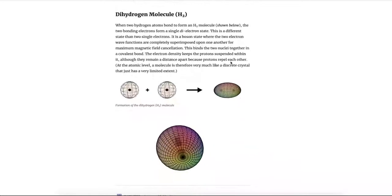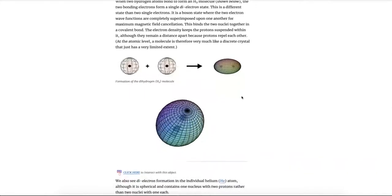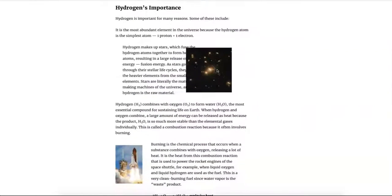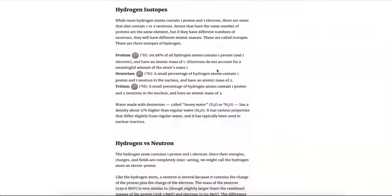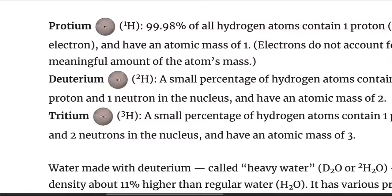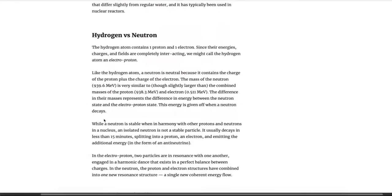This shows the formation of the hydrogen molecule — two single hydrogen atoms connect and form the hydrogen molecule, which is a dielectron with two nuclei in the center. There's also a little bit more information about the hydrogen atom and the isotopes of hydrogen that actually contain a neutron. Most hydrogen just has a proton in the center, but a small percentage also contains a neutron, making a mass of two — that's called deuterium. Two neutrons makes a mass of three — that's called tritium.